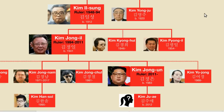Today I'm going to show you the family tree of North Korea's Kim dynasty. At the moment, there are reports that the current leader of North Korea, Kim Jong-un, might be seriously ill. This has led many people to wonder what might happen if the supreme leader were to pass away.